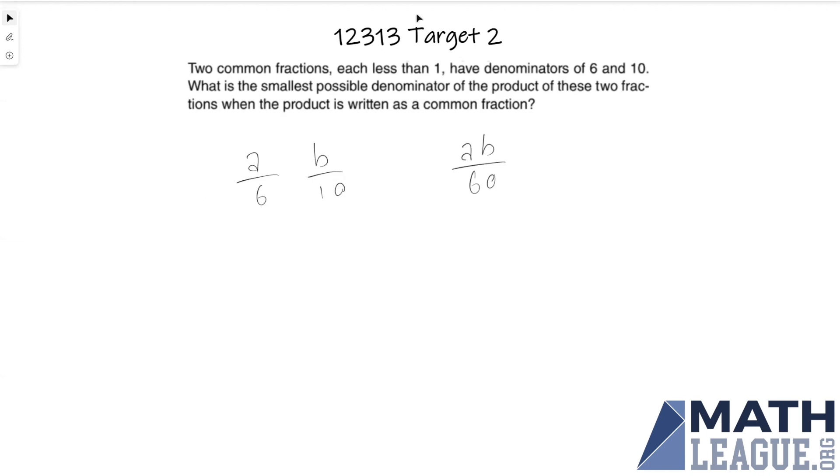The next thing we're given is that the two original fractions a over six and b over ten are both common fractions. That means that they must be fully simplified. In order for that to happen, the greatest common divisor of a and six must equal one, and the greatest common divisor of b and ten must also equal one.